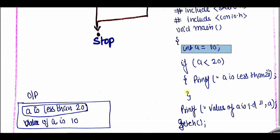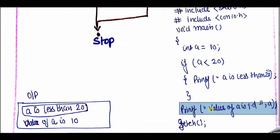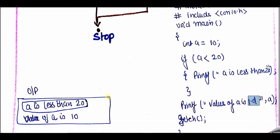After the if block, the rest of the program prints the value of a — meaning what is the exact value of a by which we print 'a is less than 20'. Because right now with the help of this printf function we just see the message 'a is less than 20', but what is the exact value of a? So I also call another printf function with the message 'value of a is %d' comma a. At the place of %d, the value of a is substituted and printed. So the output will be 'a is less than 20' and then 'value of a is 10'.